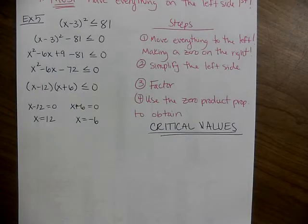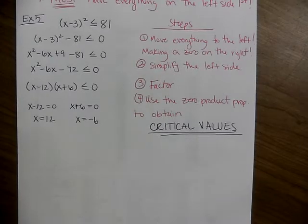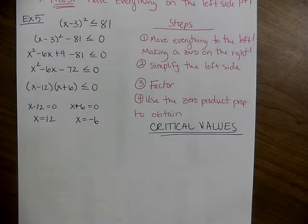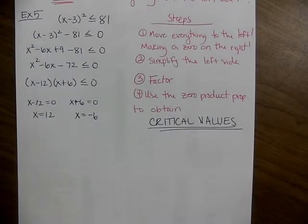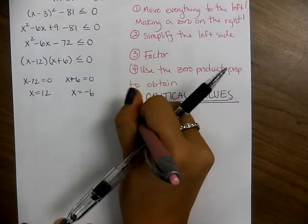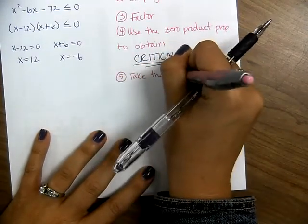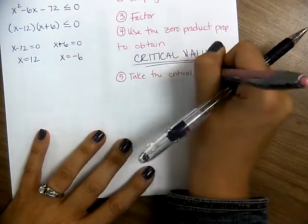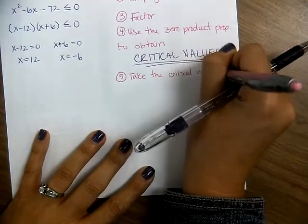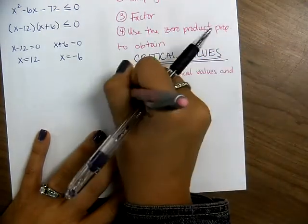When you're working with an inequality, you're solving for an interval of numbers that makes the inequality true — not like an equation where you get two solutions. You have to figure out which intervals work. Step 5: take the critical values and put them on a number line, then choose a value within each interval to test. You cannot choose the critical values themselves.